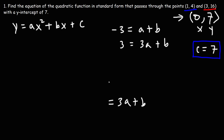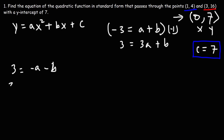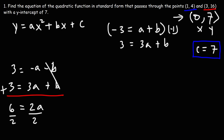So we have a system of two equations, which we need in order to solve for two variables. We could use substitution or elimination to solve these two equations — I'm going to use elimination. I'm going to multiply the first equation by negative 1. So negative 3 times negative 1 is positive 3, and a plus b becomes negative a and negative b. Now let's add these two equations. B and negative b will cancel. 3 plus 3 is 6, and negative a plus 3a is 2a. So we can divide by 2, and we get 6 divided by 2 is 3. So a is 3.